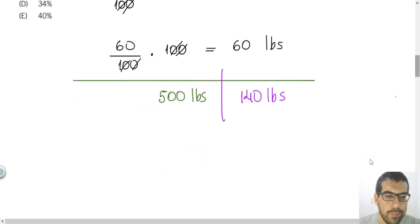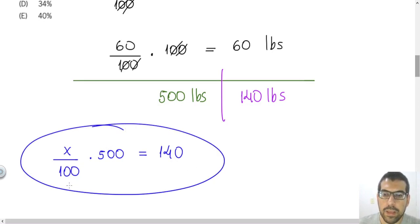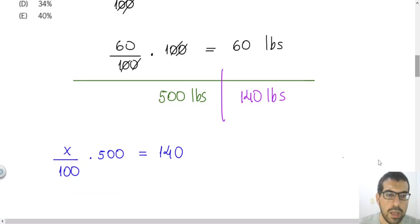So the amount of decaffeinated coffee is 140 pounds. And we just need to find out what percent of 500 will be equal to 140. I will write this question mathematically. So I can ask, what is the percent, x percent of 500, that is the stock of coffee from the grocer, what percent of 500 will be equal to 140?